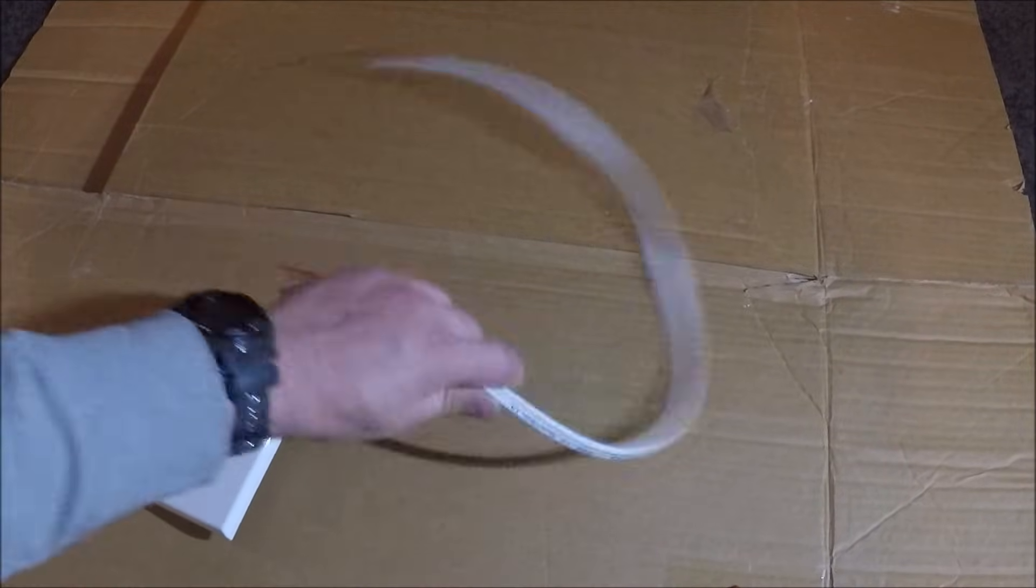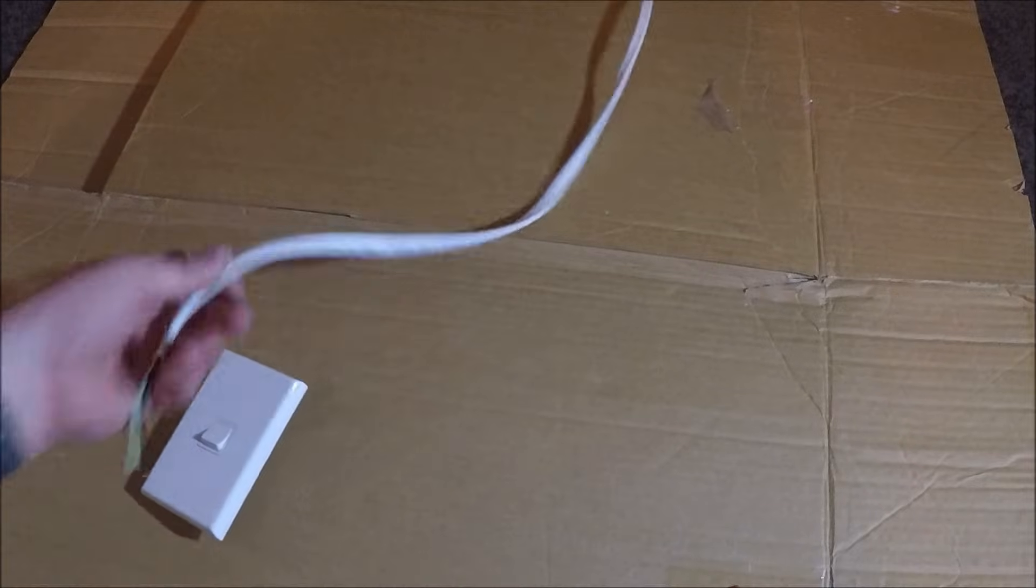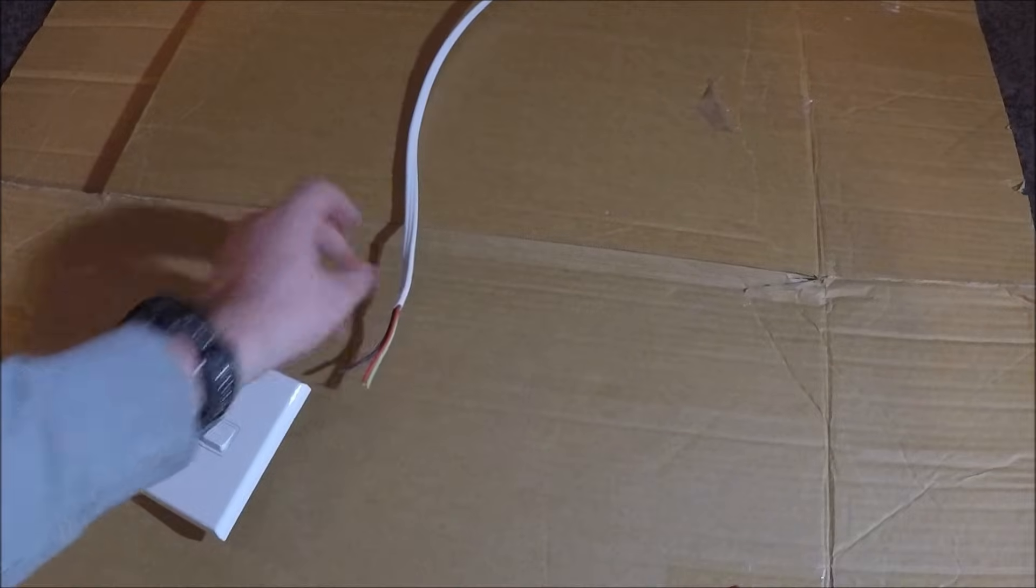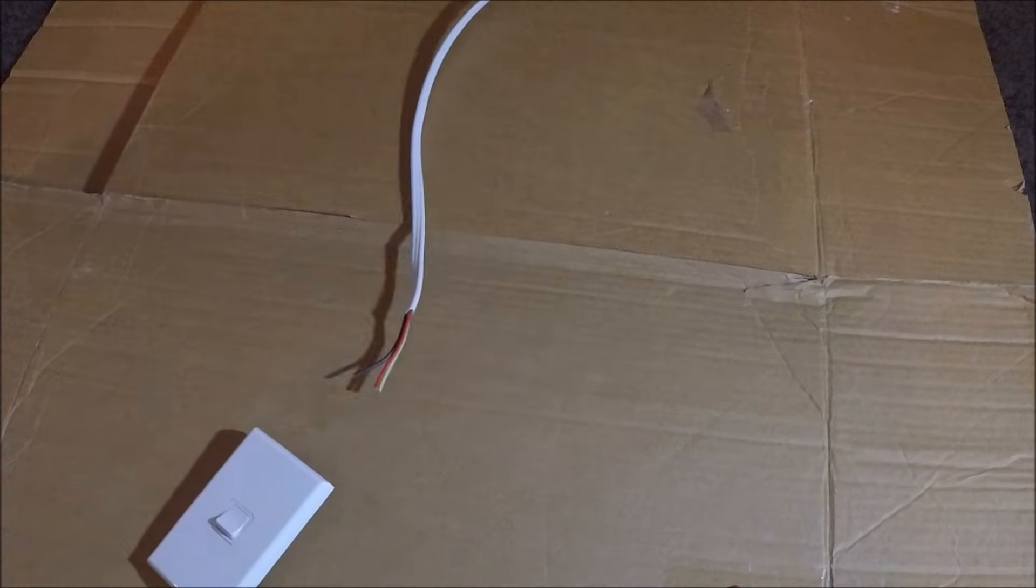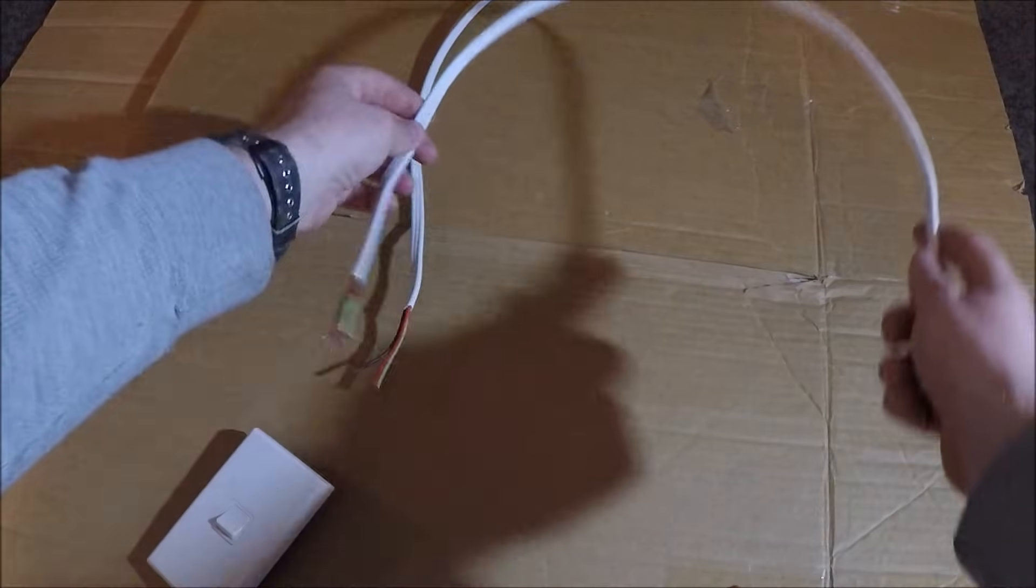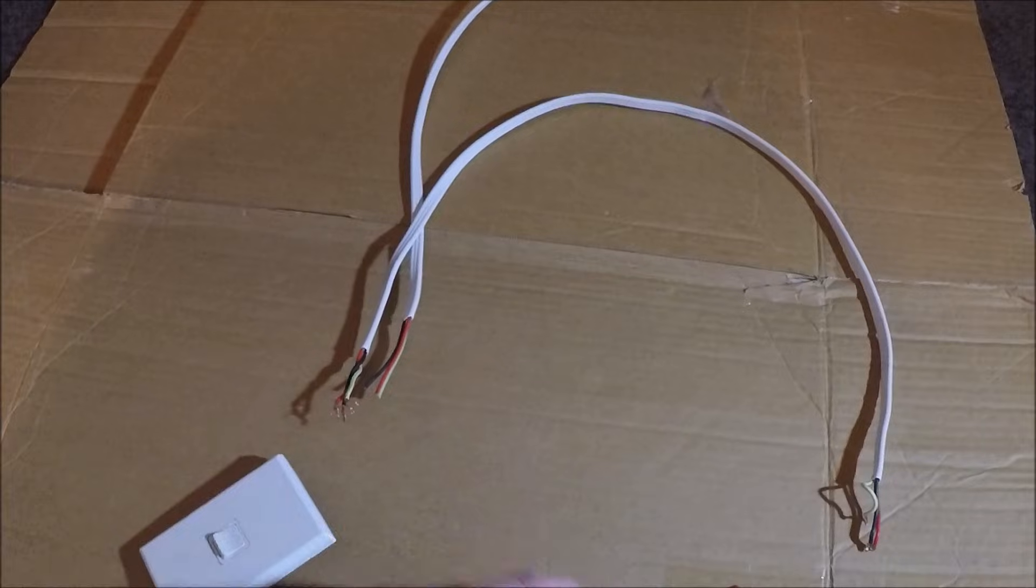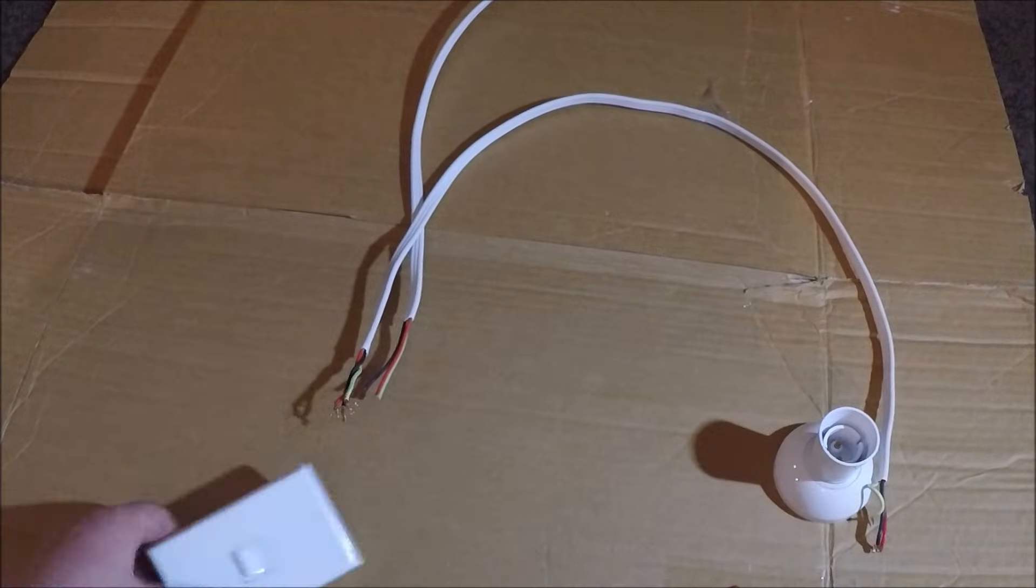First thing is this cable here. We'll imagine that end goes back to the switchboard and it runs into the back of the flush box. Now you'll have a second cable that goes to the same place and then loops out to the light fitting itself.